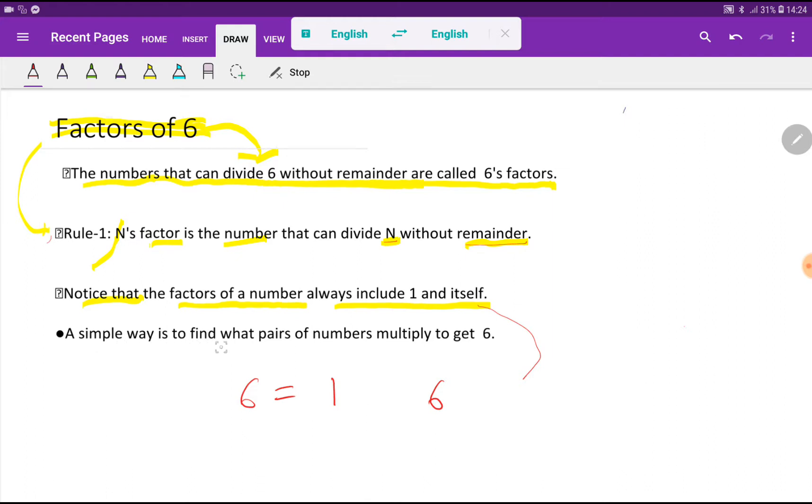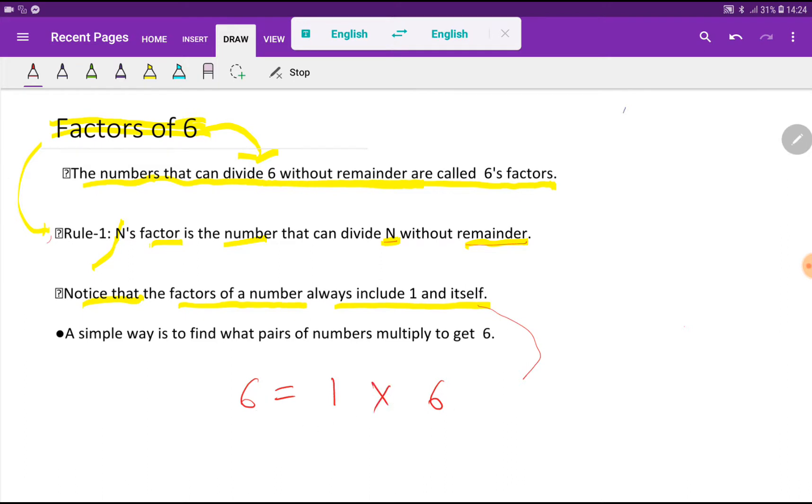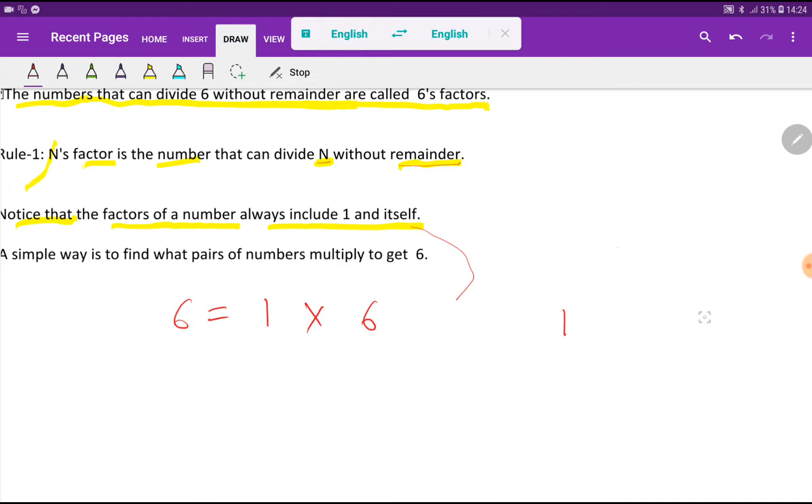A simple way is to find what pairs of numbers multiply to get 6. If I multiply 1 times 6, then I will get 6. So 1 and 6 are the factors of 6. I will write here the lowest factor and here the highest factor.